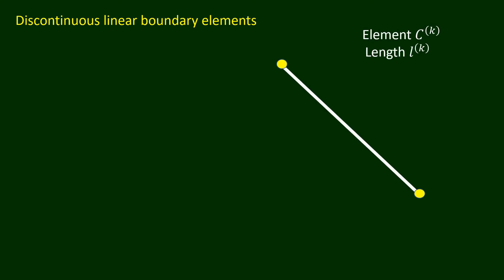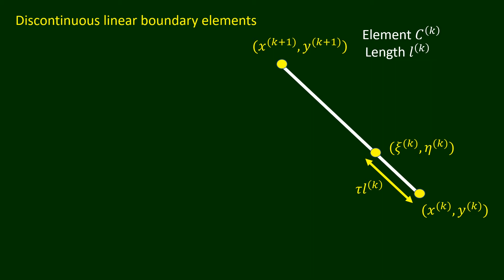Consider the k-th element ck. The length of ck is denoted by lk. The endpoints of the element ck are given by (xk, yk) and (xk+1, yk+1). For the discontinuous linear element approximations, we take the point (xi_k, eta_k) on ck. The point (xi_k, eta_k) is at a distance of tau times lk from the endpoint (xk, yk), where tau is a selected fraction between 0 and one half.